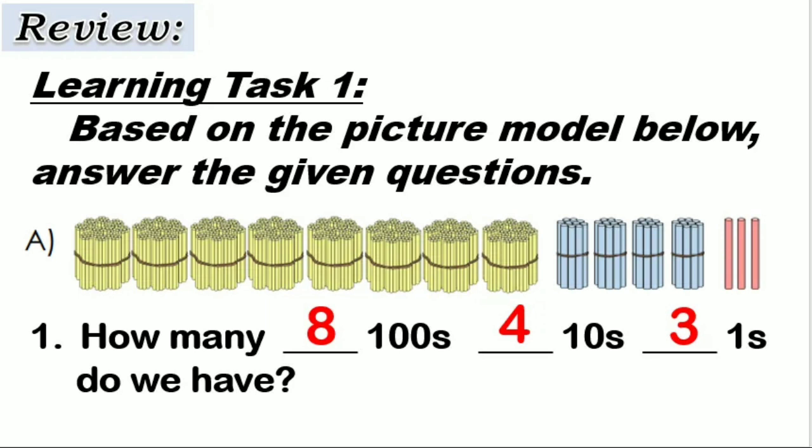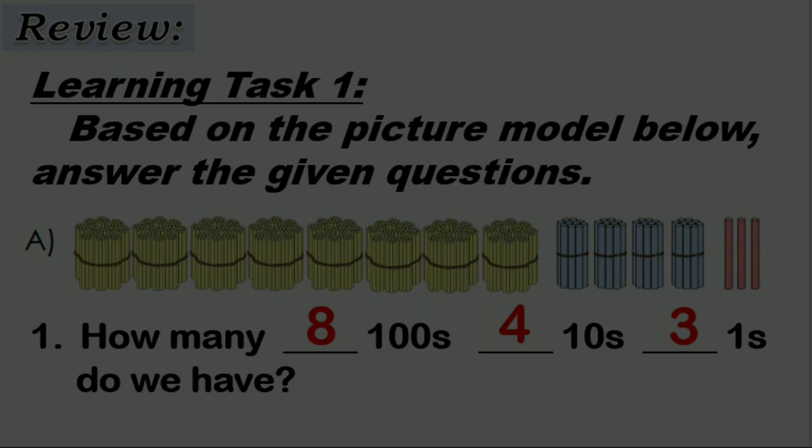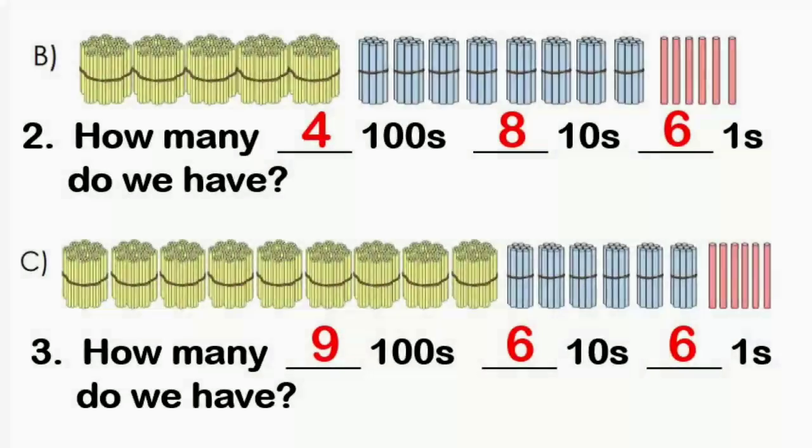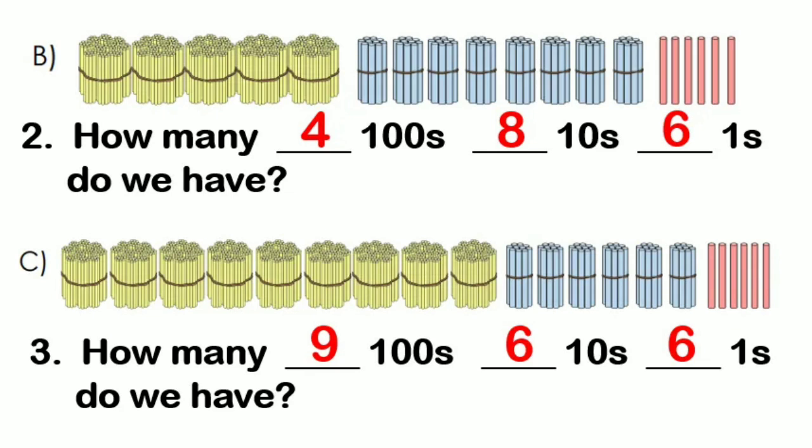There are 8 hundreds, 4 tens, and 3 ones. How about this one? There are 4 hundreds, 8 tens, and 6 ones in number 2 picture. Then we have 9 hundreds, 6 tens, and 6 ones in number 3.